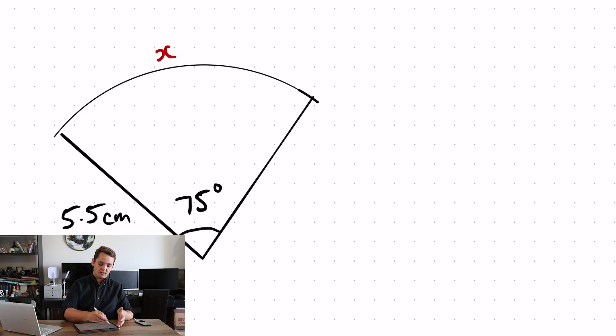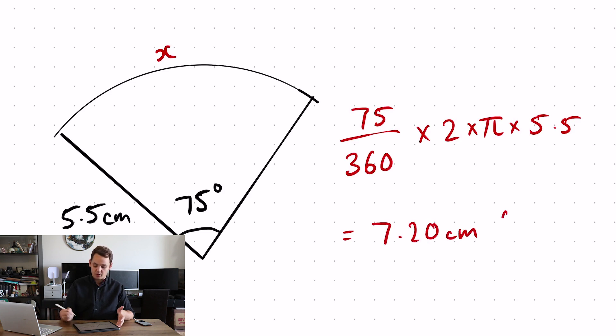So to find the length of x, I will do 75 over 360 times 2 times π times 5.5, which gives me an answer of 7.20 centimeters to 2 decimal places.